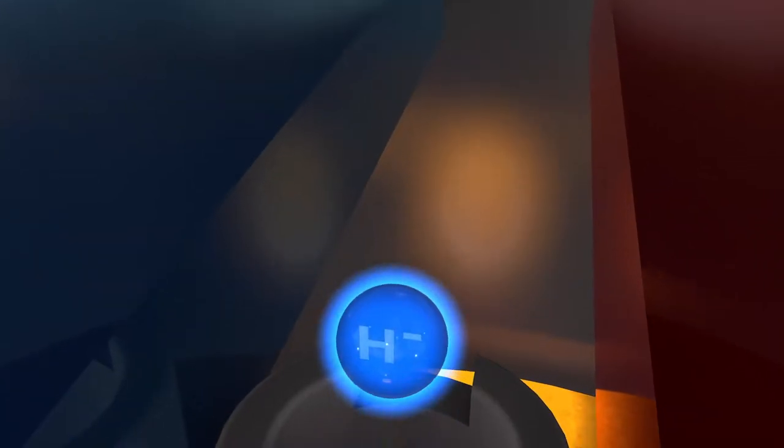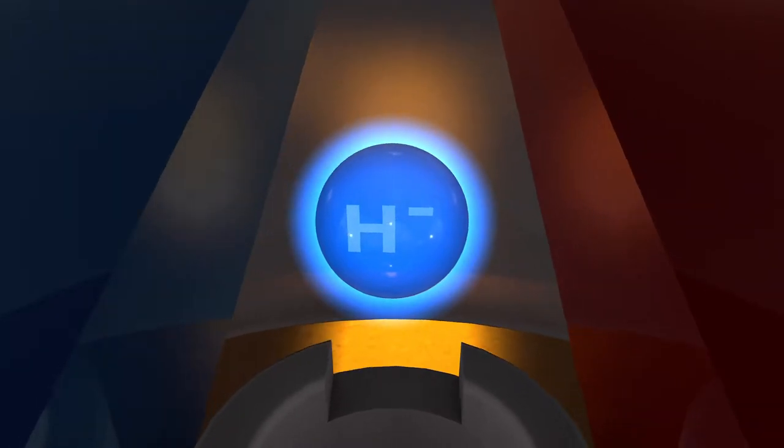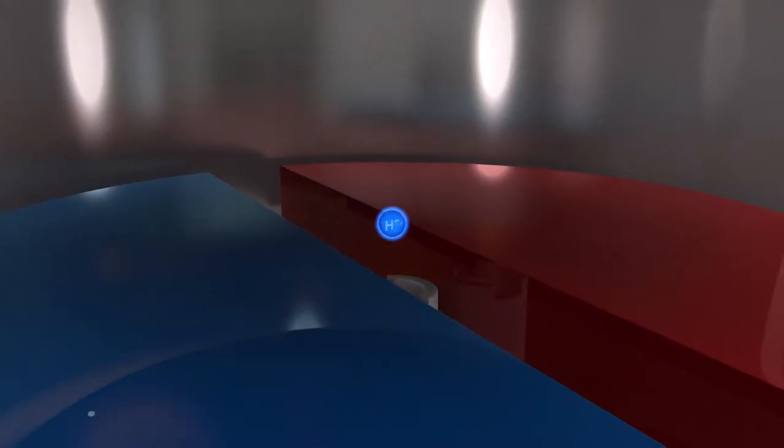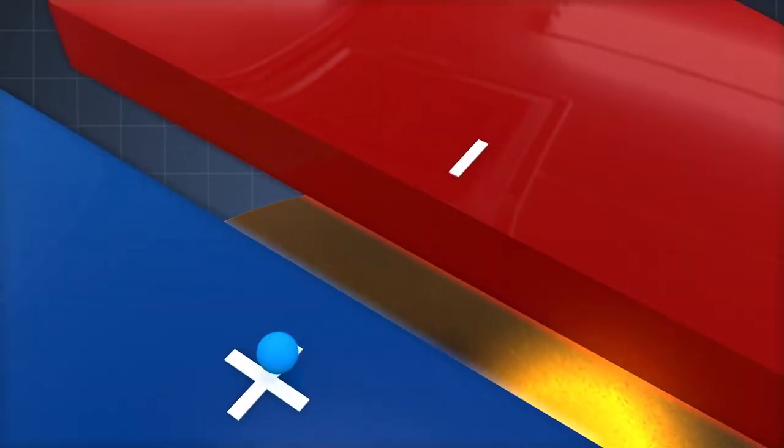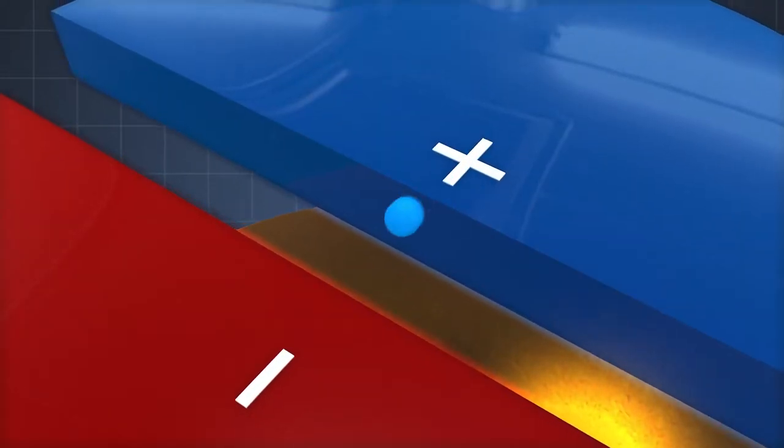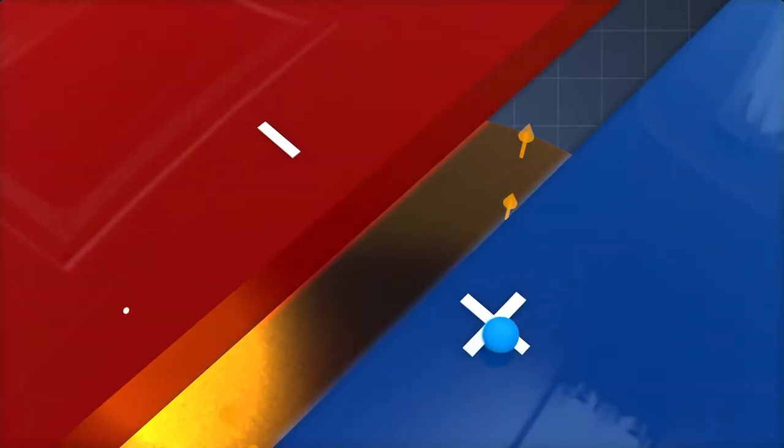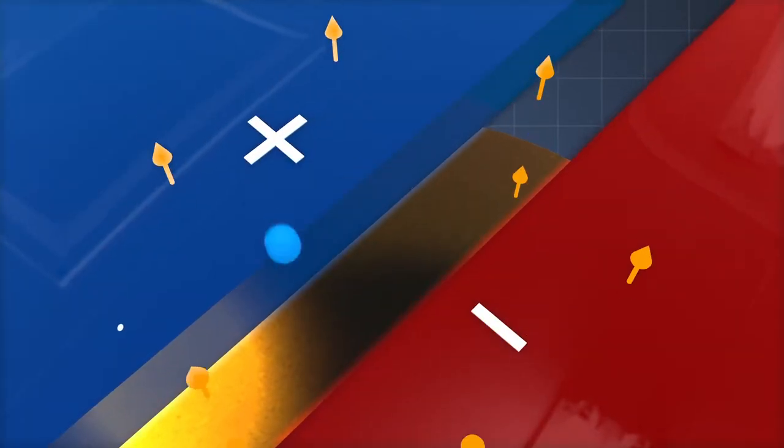While injecting hydrogen anion, which consists of a hydrogen atom and electrons to the center. Hydrogen anion is accelerated by magnetic field to the anode, being pushed away to the outside, making a circular movement.